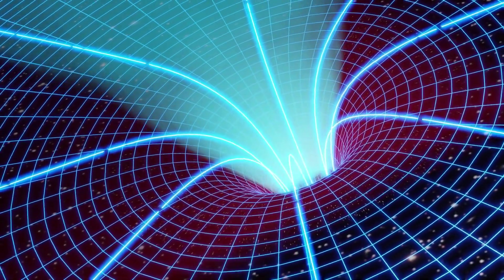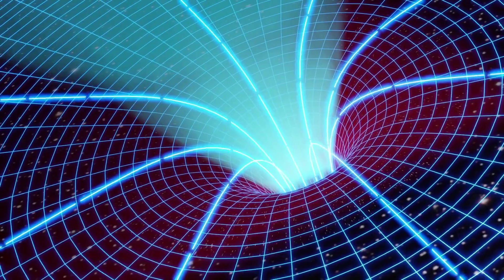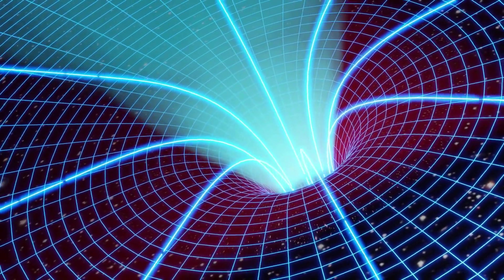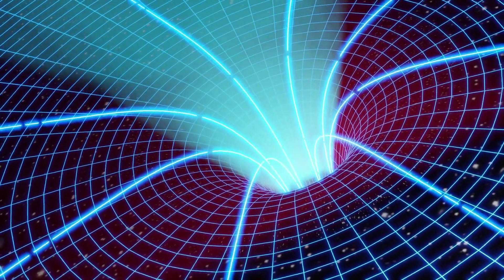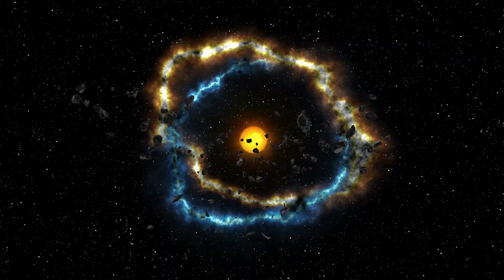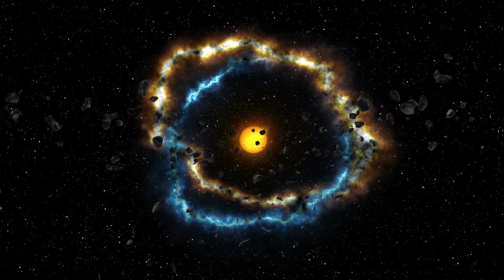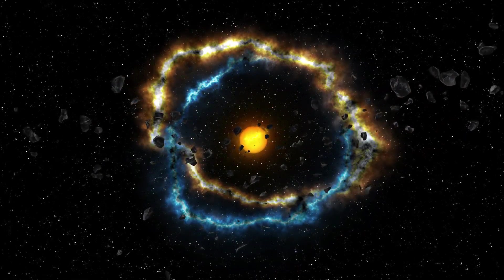When scientists calculated the structure of the universe, it became clear that there was not enough visible matter to form galaxies and more complex structures. Without dark energy, stars are more likely to be scattered all over the place and not form galaxies.